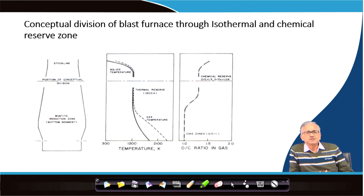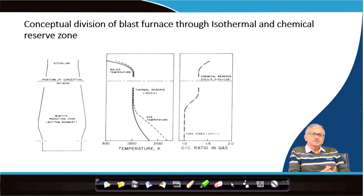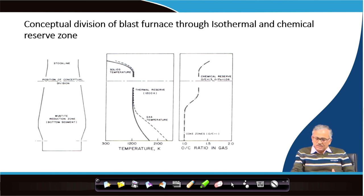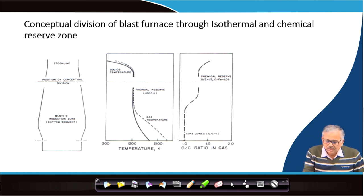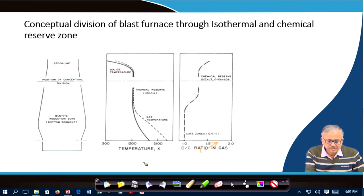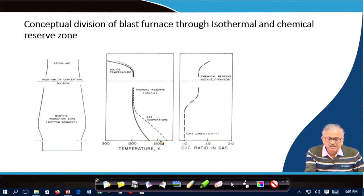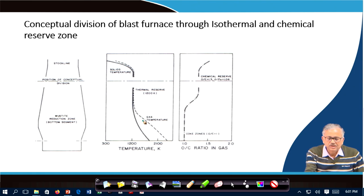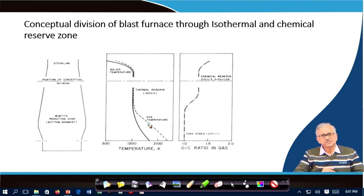Now, the conceptual division of the blast furnace through the isothermal and chemical reserve zone. If you see diagram one, this shows the temperature profile: the solid line represents the solid temperature and the dotted line represents the gas temperature profile.